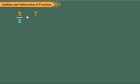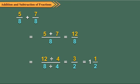Let us add 5 upon 8 and 7 upon 8. After simplifying, the final answer should always be expressed in its simplest form.